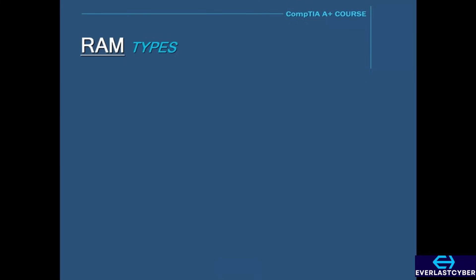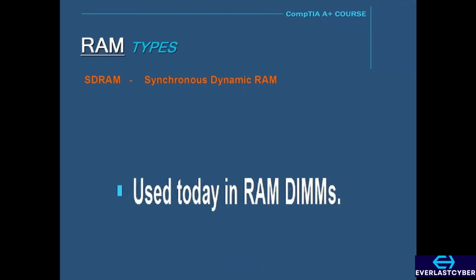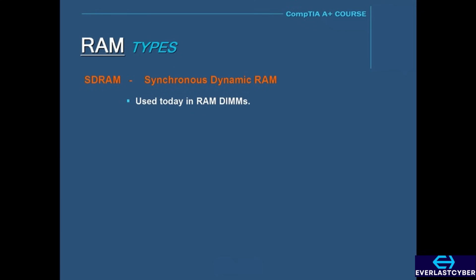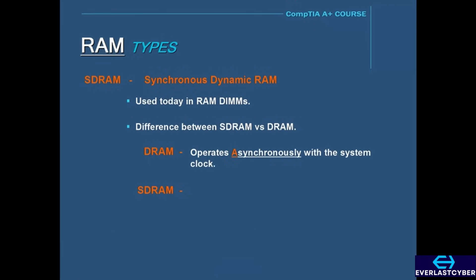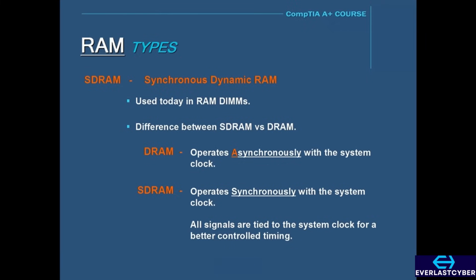Another type of memory is called SDRAM, which stands for Synchronous DRAM. This type of memory is what is used today in RAM DIMMs. The difference between SDRAM and DRAM is speed. The older DRAM technology operates asynchronously with the system clock, which means that it runs slower than the system clock because its signals are not coordinated with it. But SDRAM runs in sync with the system clock, which is why it is faster than DRAM. All the signals are tied to the system clock for better controlled timing.